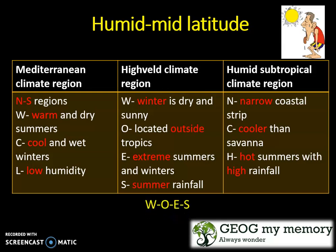The humid subtropical climate region is found on the narrow coastal strip. It is cooler than the savannah and has hot temperatures with high rainfall.